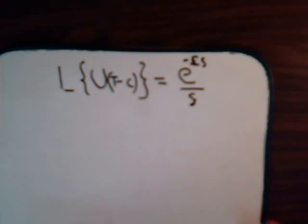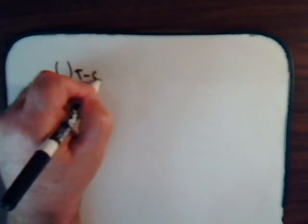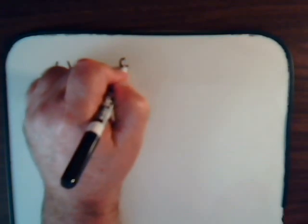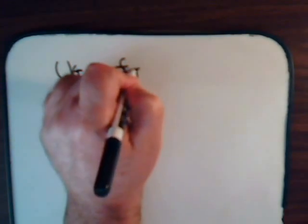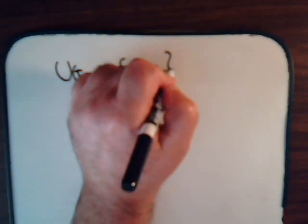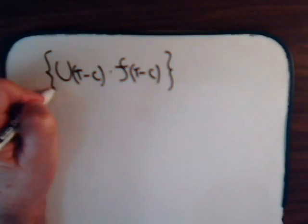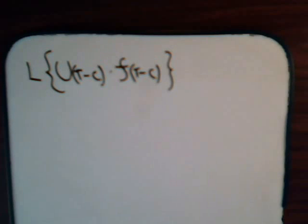As we noticed in the last video, the most interesting application of the unit step function is when other functions are multiplied by it. So let's consider the most general case where we have the step function multiplying not some function f of t but f of t minus c. What would be the Laplace transform of that expression?